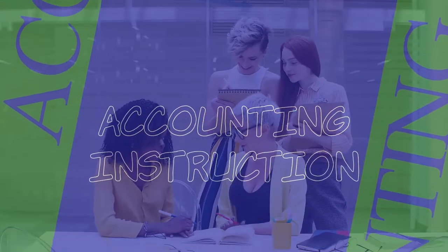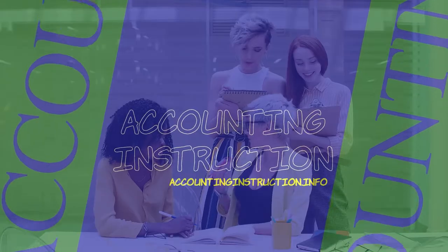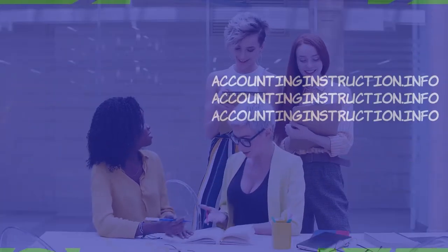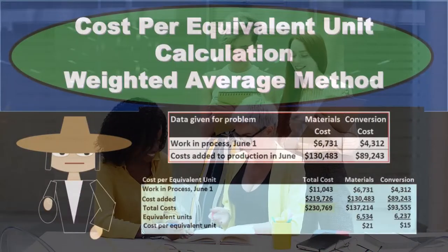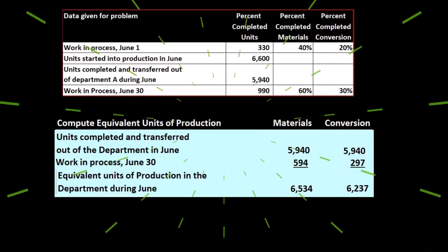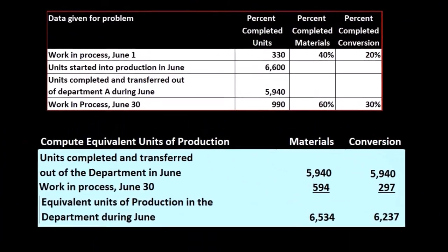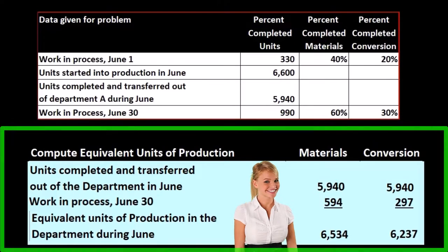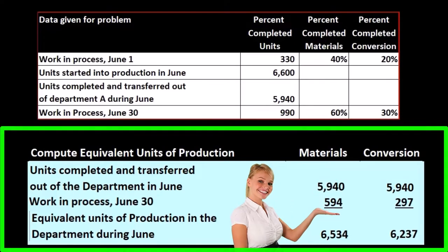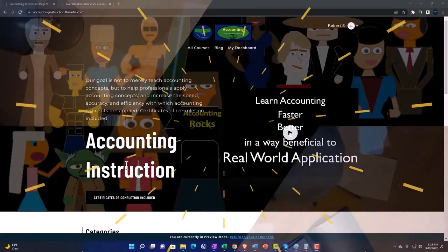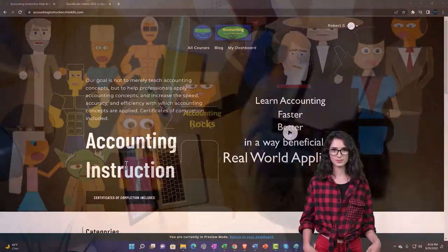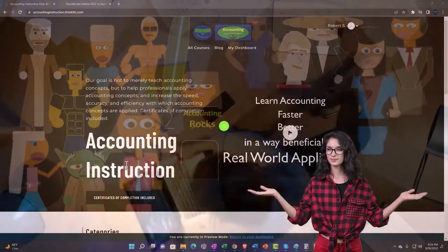In this presentation we will calculate cost per equivalent unit using the weighted average method. Last time we computed equivalent units of production for materials.